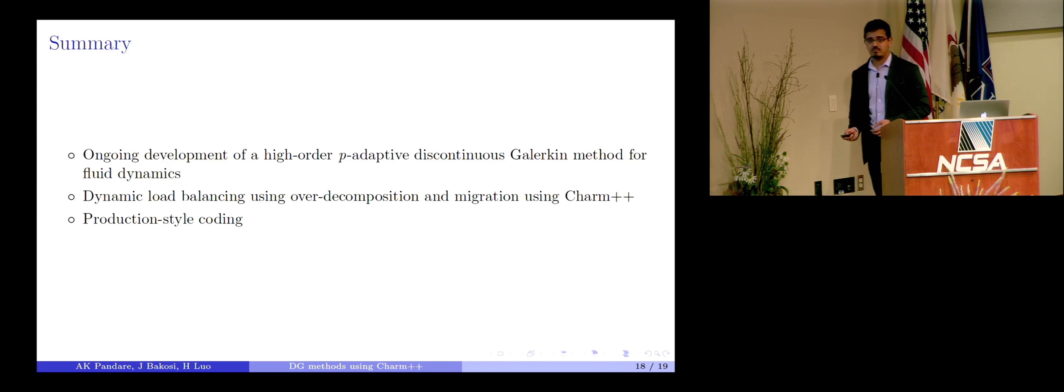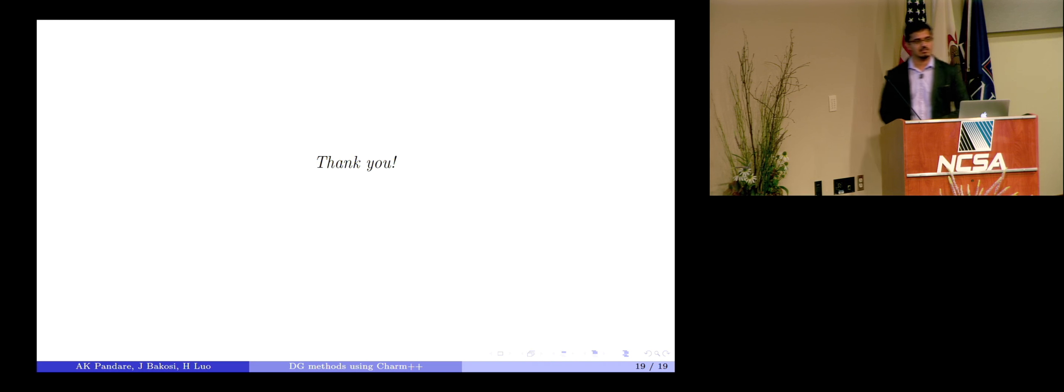To summarize, I went through the ongoing development of a high-order p-adaptive DG scheme. And I tried to explore some dynamic load balancing using over-decomposition and migration using Charm++. And I just want to mention here that this is very production-style coding. So, it's going to take some time to get there, but it seems that we are on a good path. All right. Thank you.